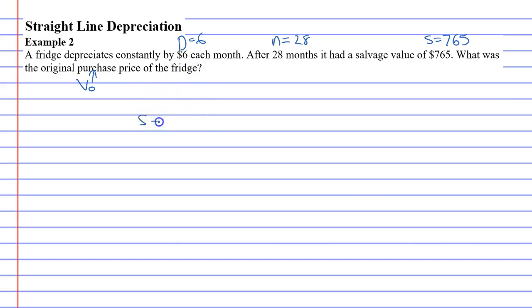So taking our equation S equals V0 minus D times N, let's plug some values in. So our salvage value is $765. We don't know what V0 is. D was 6 and N was 28.